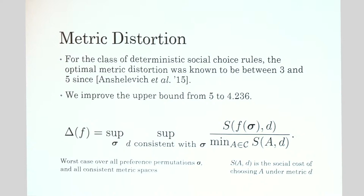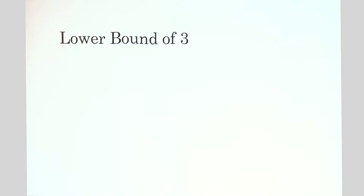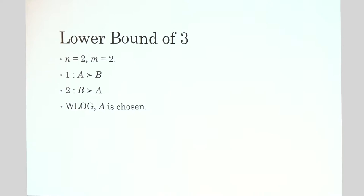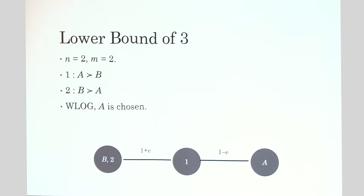To warm up, let's look at an example showing the lower bound of 3. There are two candidates and two voters. Voter one thinks A is better than B; voter two thinks B is better than A. By symmetry we can assume A is chosen by the deterministic rule. The bad case is: A is chosen, but voter one is nearly indifferent between A and B, while voter two likes B a lot better than A. In that case, choosing A has a social cost of about 3 — the distance from voter one to A plus voter two to A — while choosing B has a social cost of about 1.